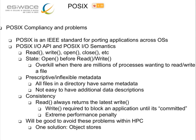With POSIX, we have seen very prescriptive and inflexible metadata, because you're constrained by what your infrastructure provides. All files in a directory have the same metadata and it's not easy to provide additional metadata descriptors in POSIX. Also, one of the problems as you go towards exascale is consistency — read always returns the latest write, which means read is required to block until it's fully committed. You can imagine what happens when you throw more and more processes trying to share a pool of data — it creates extreme performance penalties.